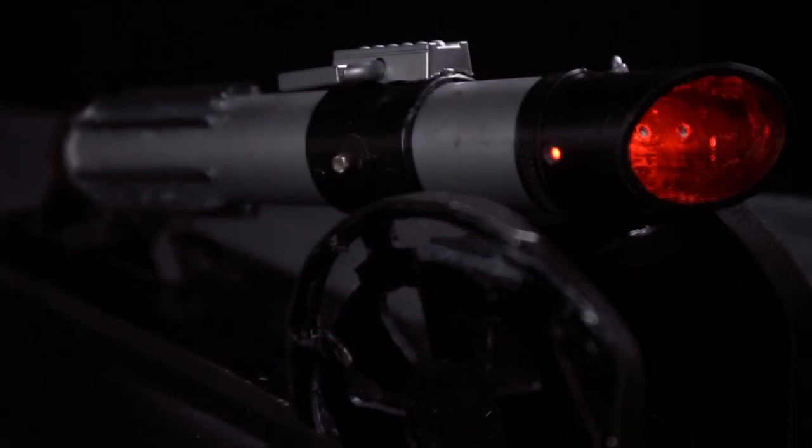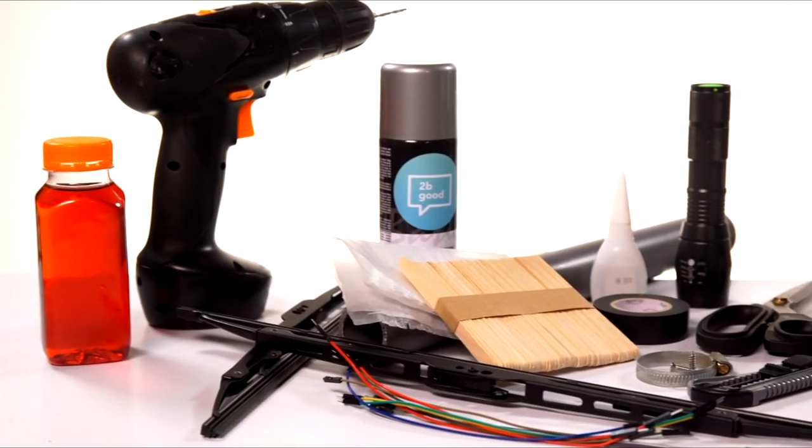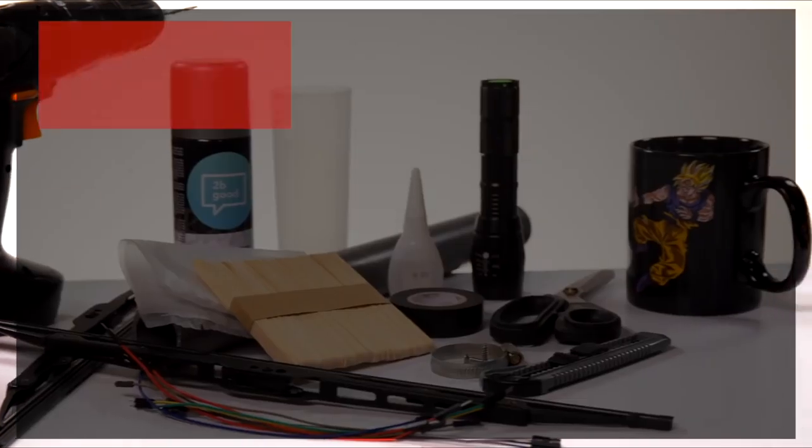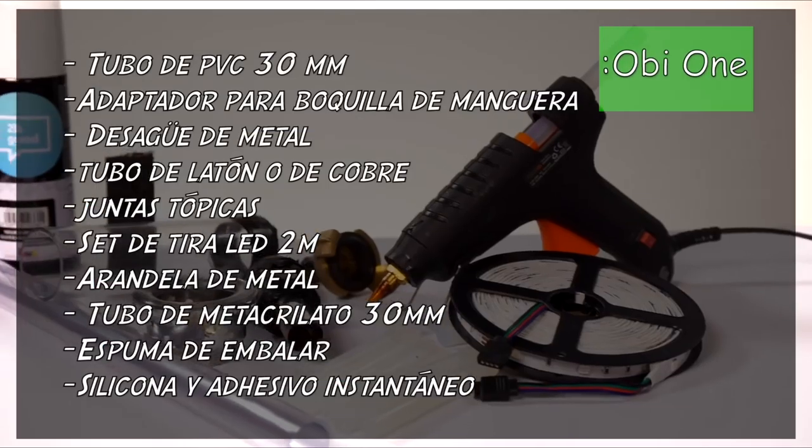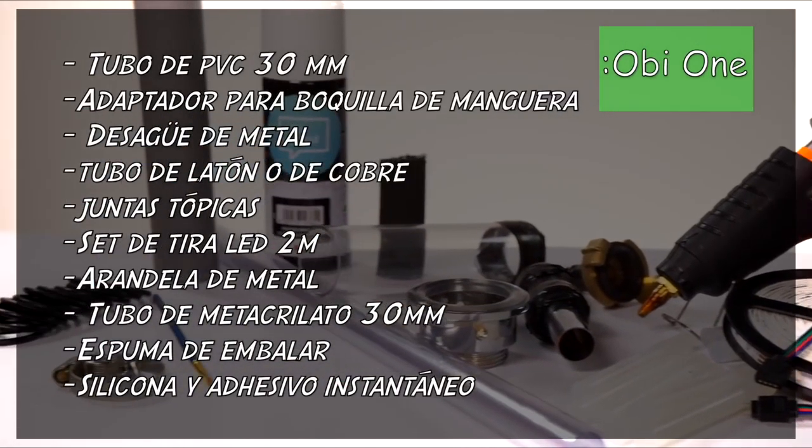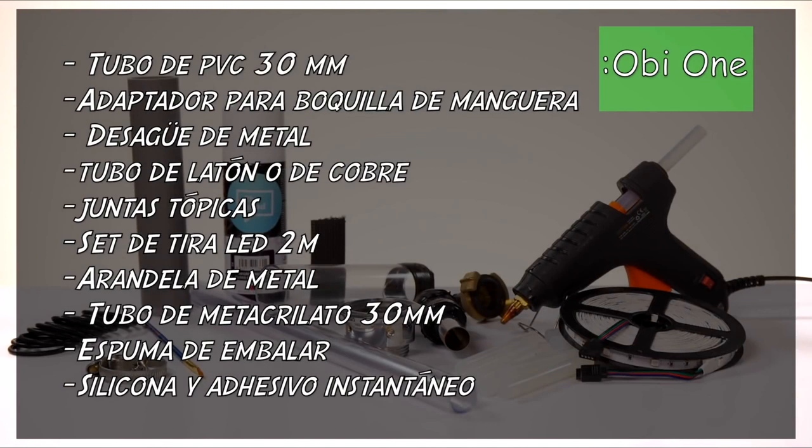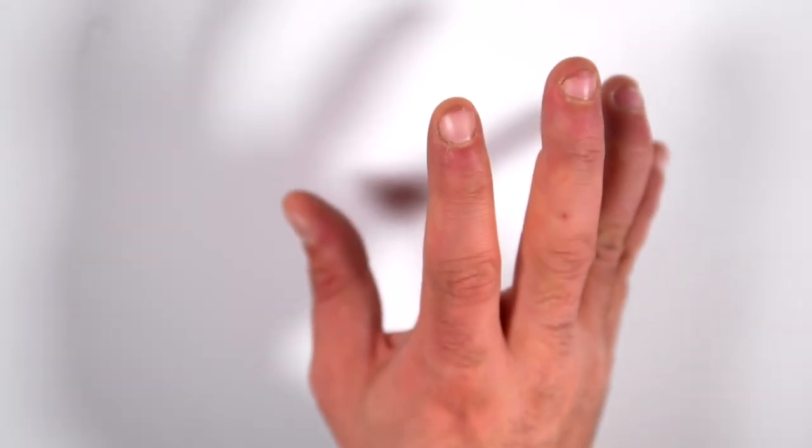These are the materials you need in PVC: two DC pads of 30 millimeters long, LED flashlight, plastic cups, windshield wipers, switch cables, color plastic film, black and silver spray, craft wooden sticks, plastic bottle, silicone, instant glue, nose nipple adapter, metal sink waste of metal or copper pipe, wire rings, two meters of LED light strip or acrylic tube, and foam packaging.